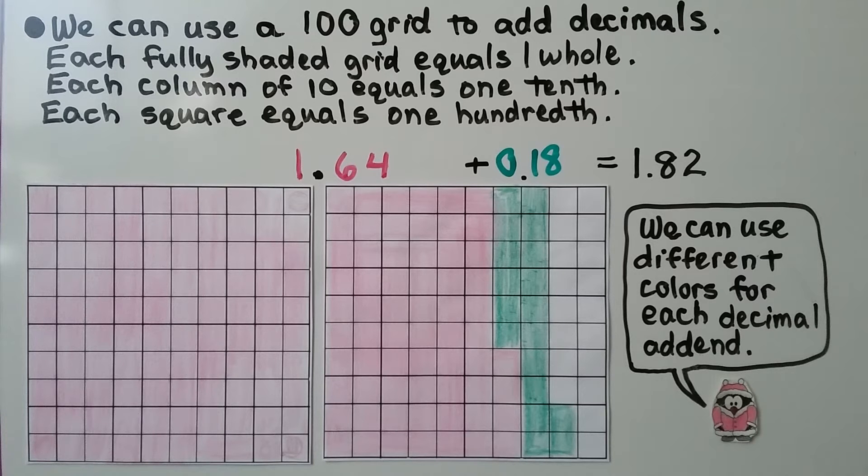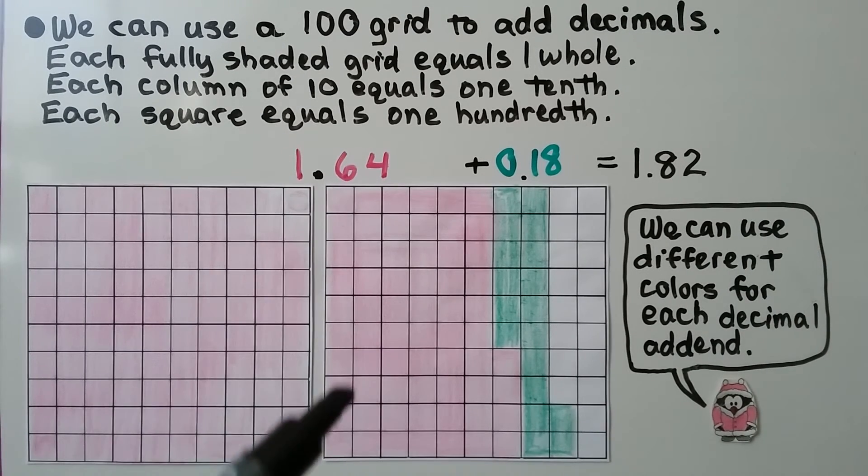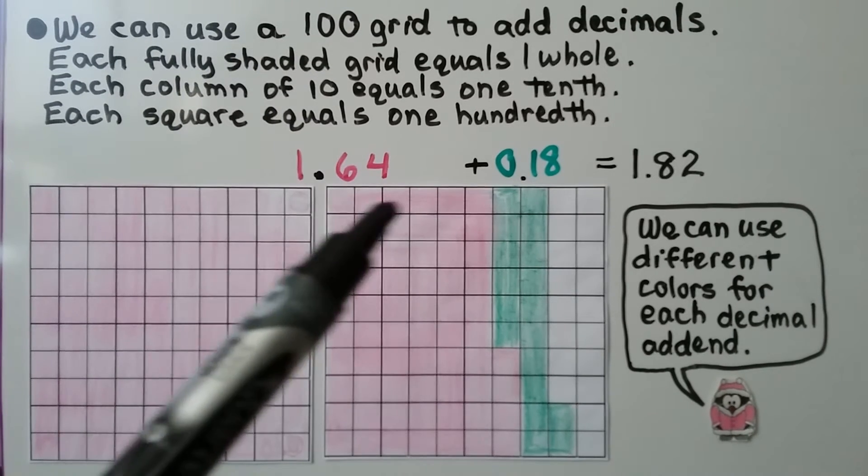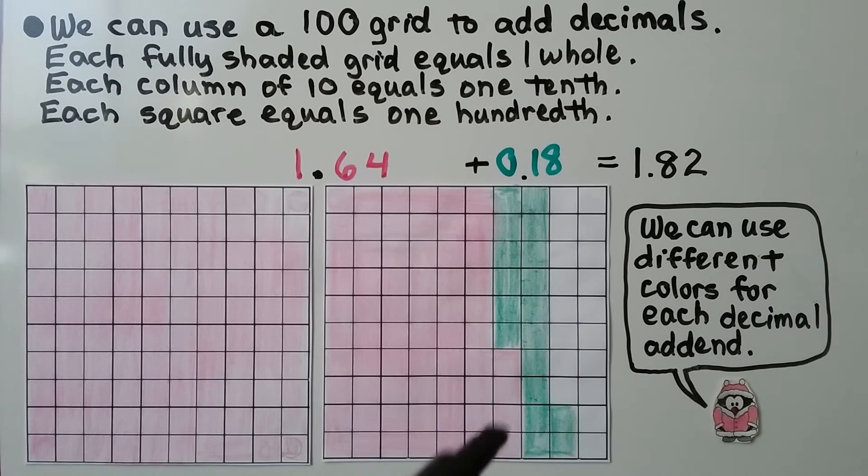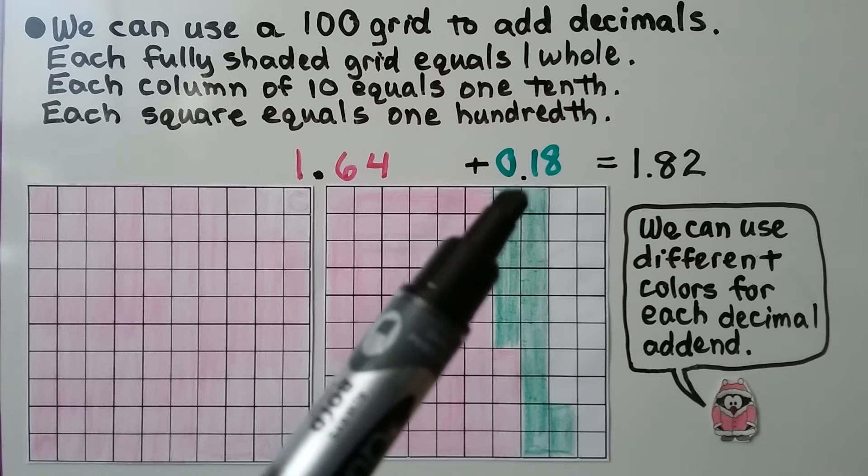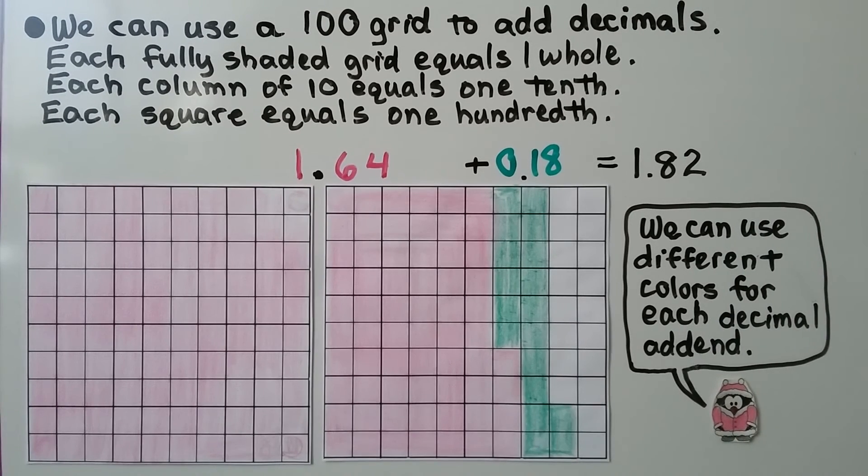If we need to add 1 and 64 hundredths, we have 1 full shaded one for the 1 whole. And we have 6 columns fully shaded for the 6 tenths. And we have 4 squares shaded. That, in the pink, would be 1 and 64 hundredths. We can add 18 hundredths by shading in 18 more squares. It's equal to 1 and 82 hundredths. We can use different colors for each decimal to help us.